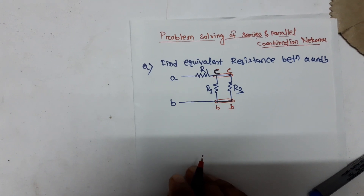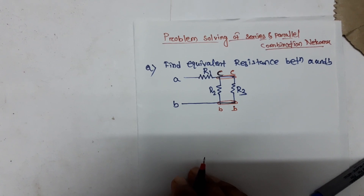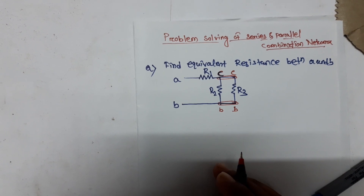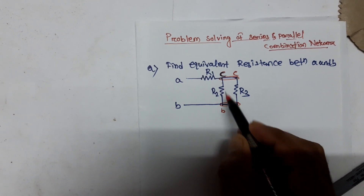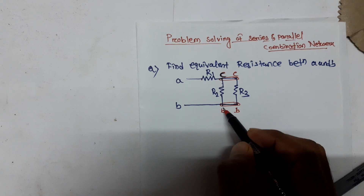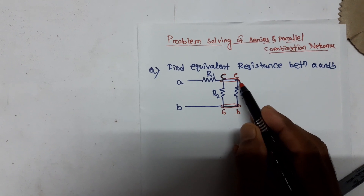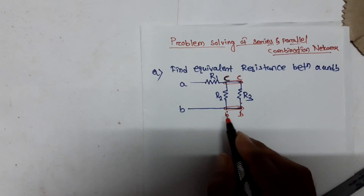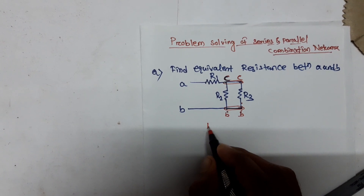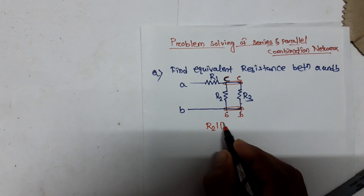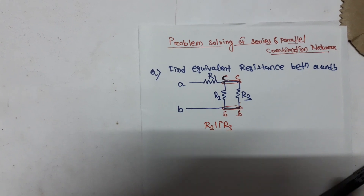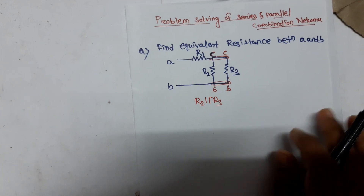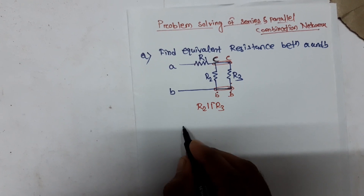We know the parallel connection: two elements are in parallel when they share the same potential difference. Here R2 is connected between nodes C and B, and R3 is also connected between C and B — so R2 and R3 are connected in parallel. We redraw the circuit.